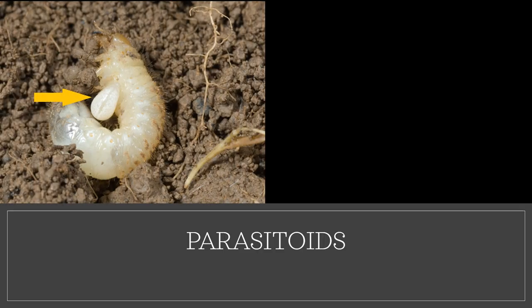Another example of a parasitoid is the interaction between a Japanese beetle grub with an external Tephea larval parasitoid, shown in the yellow arrow. This Tephea larva will later develop within this host and will eventually kill the host, the Japanese beetle grub.